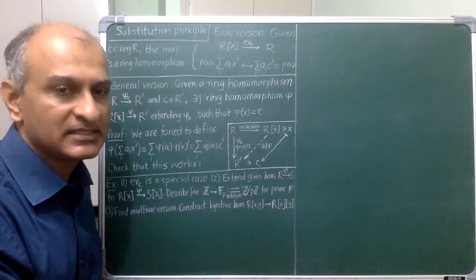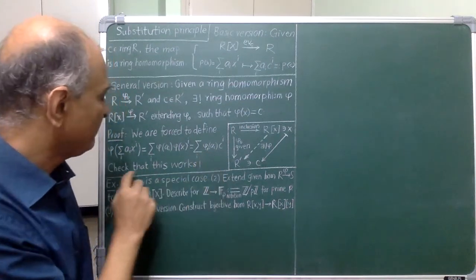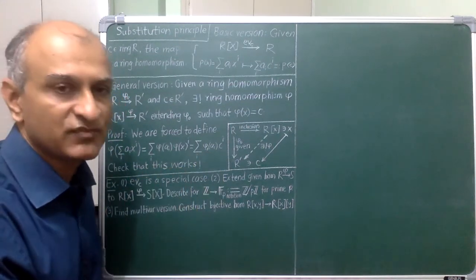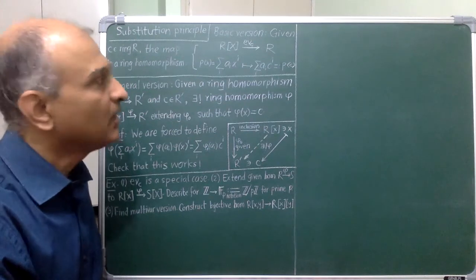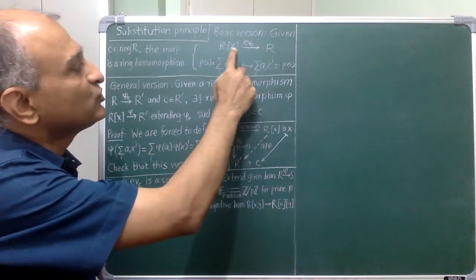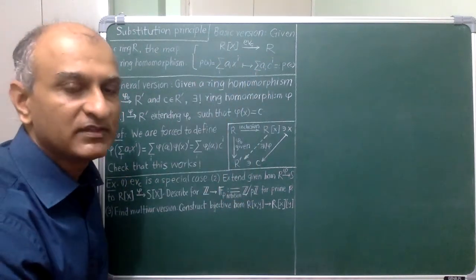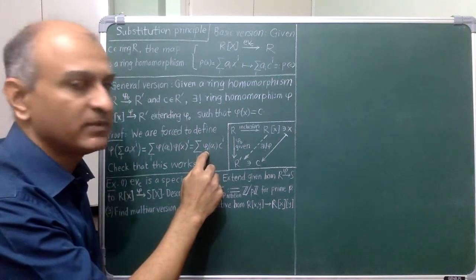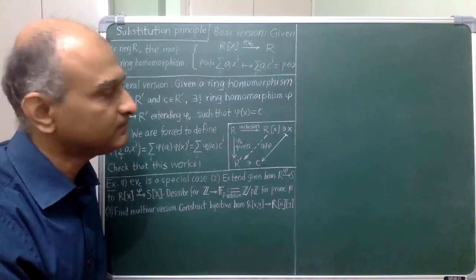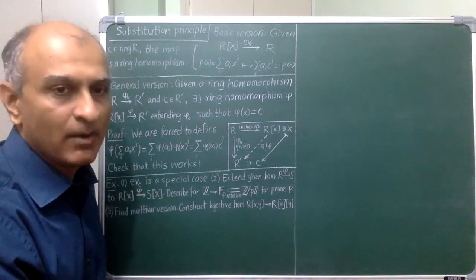Now, I simply take it as a definition of phi and verify that phi defined in this way is a ring homomorphism by using the same method that I used over here along with the fact that phi_0 is given to be a ring homomorphism. Okay, so some comments.